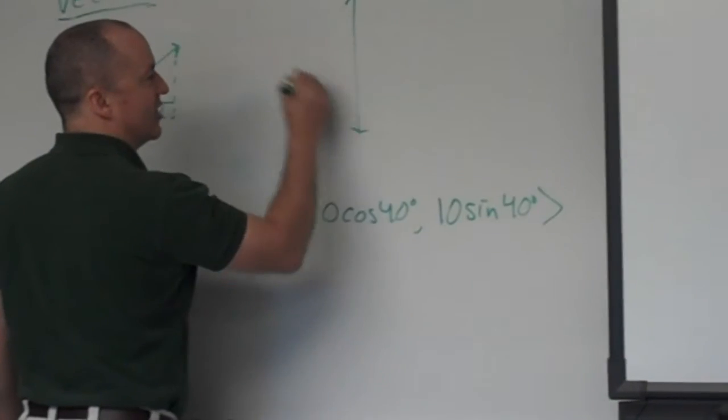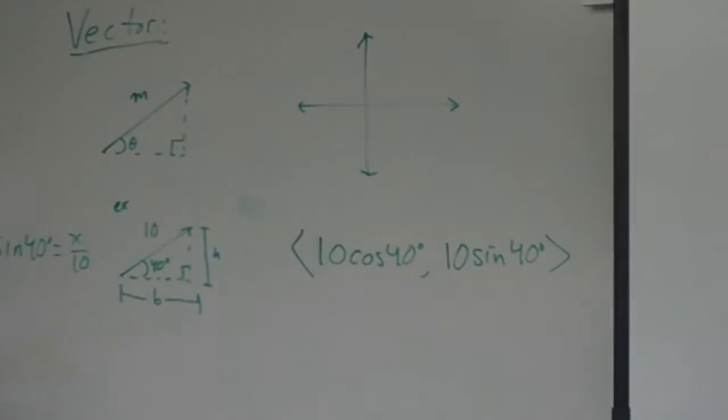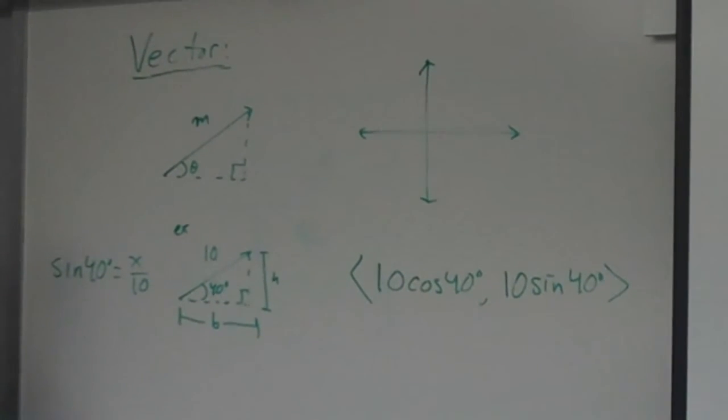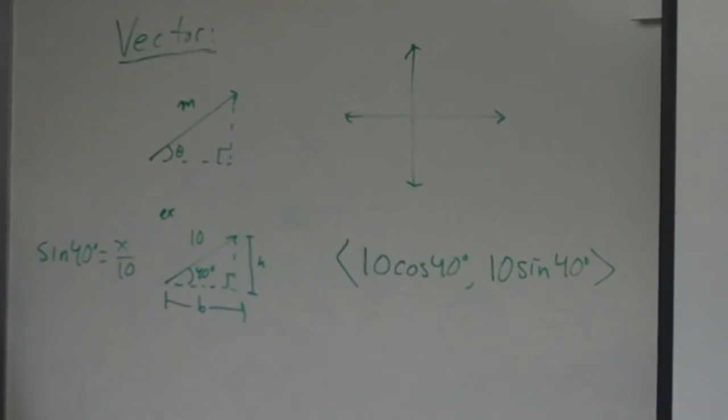So if I don't give you any other information and I say, graph that vector... Student: You basically just have to know that you have a slope of 40 degree... You have to have 40 degrees and 10 units. Teacher: Yeah. Yeah. So anywhere... You can pick anywhere you want to start.